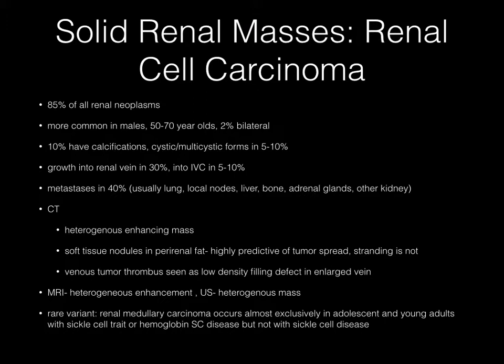Calcifications can be seen in a minority of cases, and cystic and multicystic forms are present in roughly 5 to 10% of cases. Growth into the renal vein and IVC are important to note as they have therapeutic implications. These metastasize in about 40%, usually to lung, local lymph nodes, liver, bone, adrenal glands, and the contralateral kidney. CT findings include a heterogeneously enhancing mass, and if you see soft tissue nodules in the perirenal fat, that is highly predictive of tumor spread.